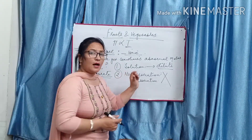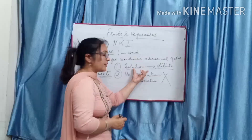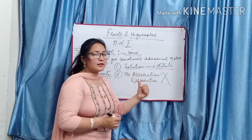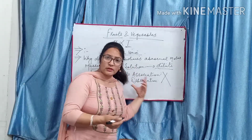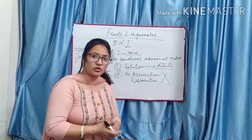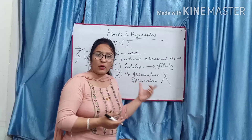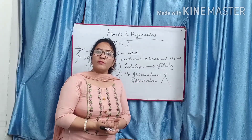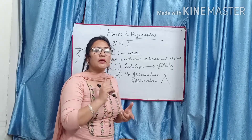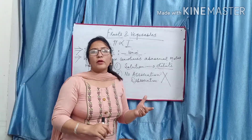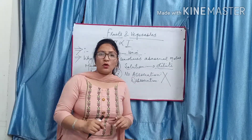Agar solution concentrated hai toh us mein jo nature hai uspe depend karega - acid mein association hoti hai, sodium chloride mein dissociation hoti hai. Agar solution dilute hai toh there should be no association and no dissociation. But agar solution concentrated ho jaaye toh ya toh association hoga ya dissociation. Jab yeh dono properties aa jaati hain - solution concentrated aur association ya dissociation - toh molar masses inaccurate ho jaate hain, yani abnormal molar masses aane lagte hain. This is all about the questions of osmotic pressure.